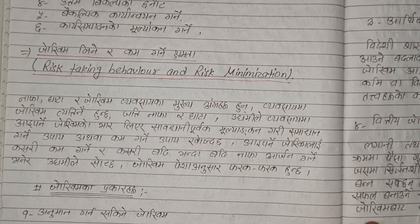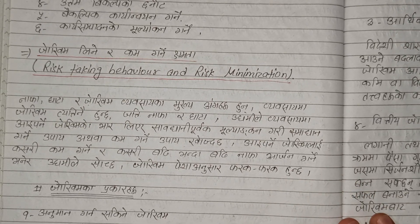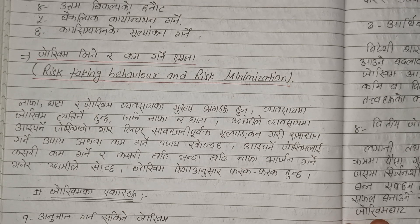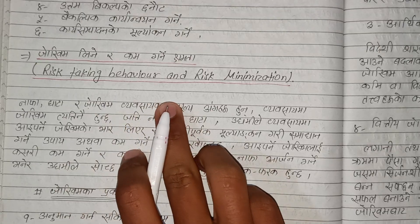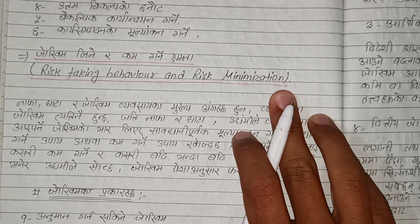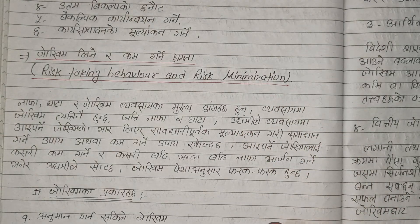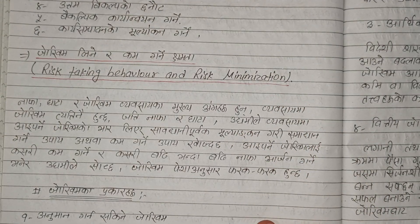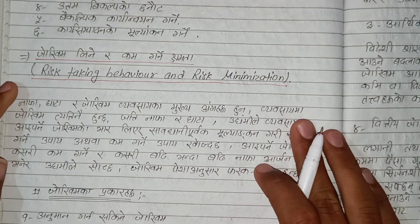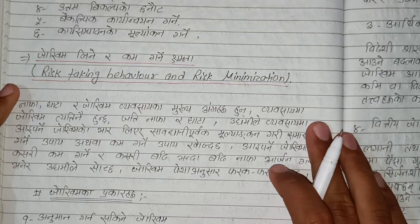Basically, there is risk-taking behavior and risk minimization behavior, and these are important aspects. Risk-taking behavior and risk minimization behavior are key entrepreneur competencies you need to know.